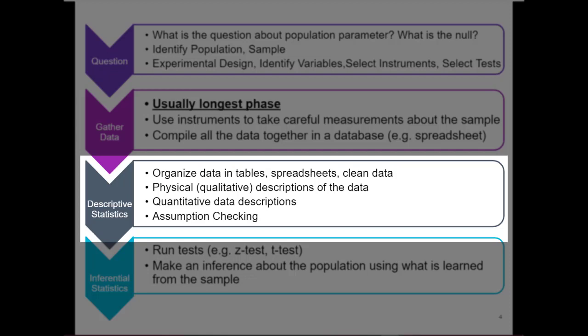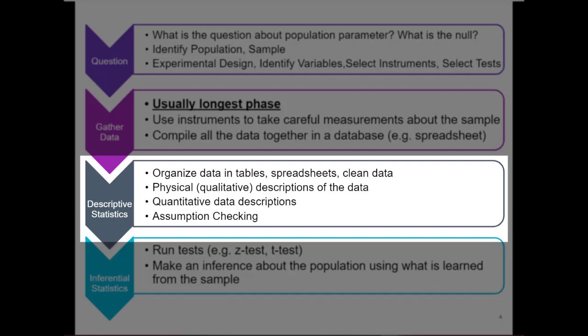The next phase is the descriptive statistics phase. In this phase we start to actually work with the raw data. You start to organize the raw data in tables and spreadsheets, you start cleaning the data for factors that you may not need or that you feel may be a mistake, you start describing the data both qualitatively and quantitatively, and you start checking assumptions. This is what's done in the descriptive statistics phase.